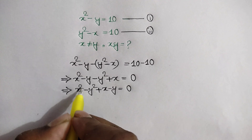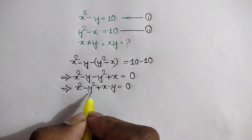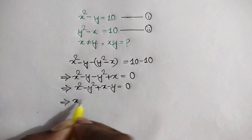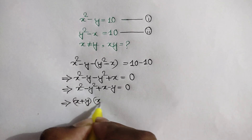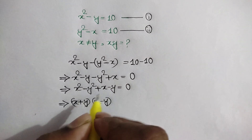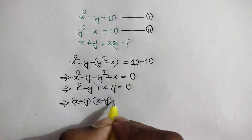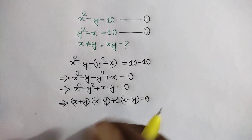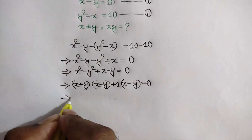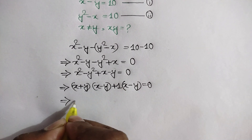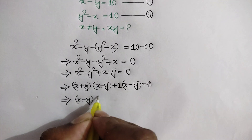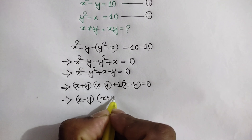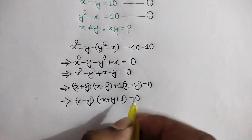Applying the formula a squared minus b squared equals a plus b times a minus b, we can write x plus y times x minus y. For the last two terms we can take out the common factor plus 1, giving us x minus y. So we can take common x minus y, and we get x minus y times x plus y plus 1 equals 0.